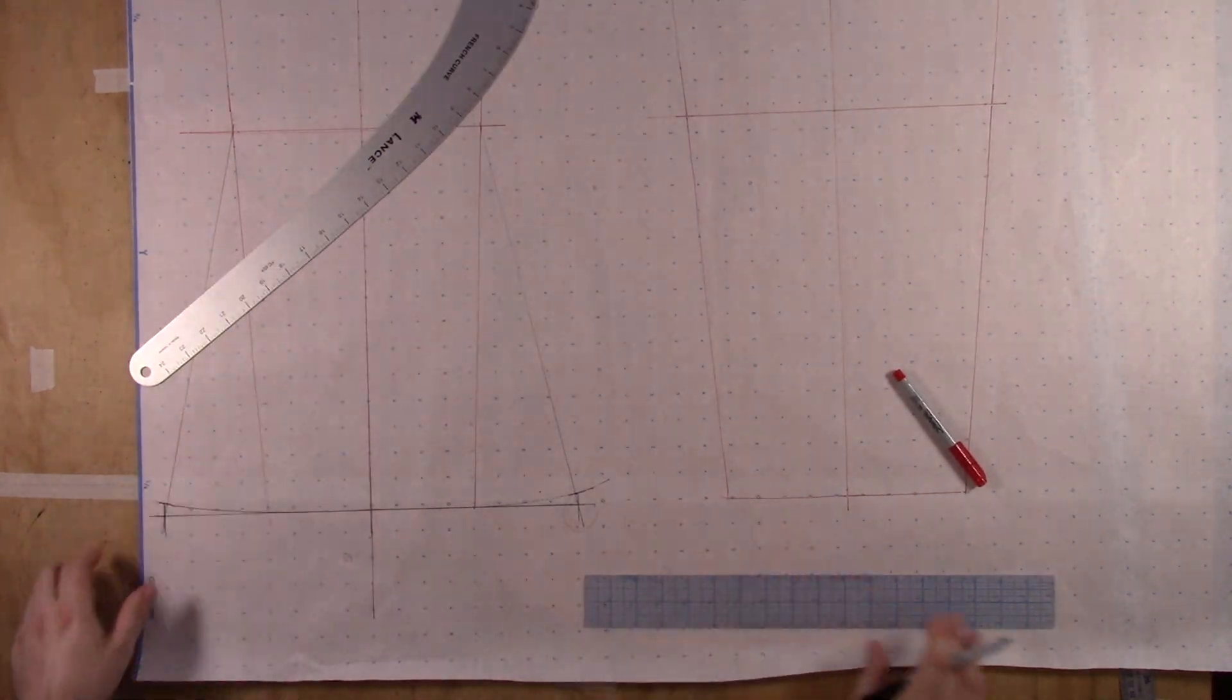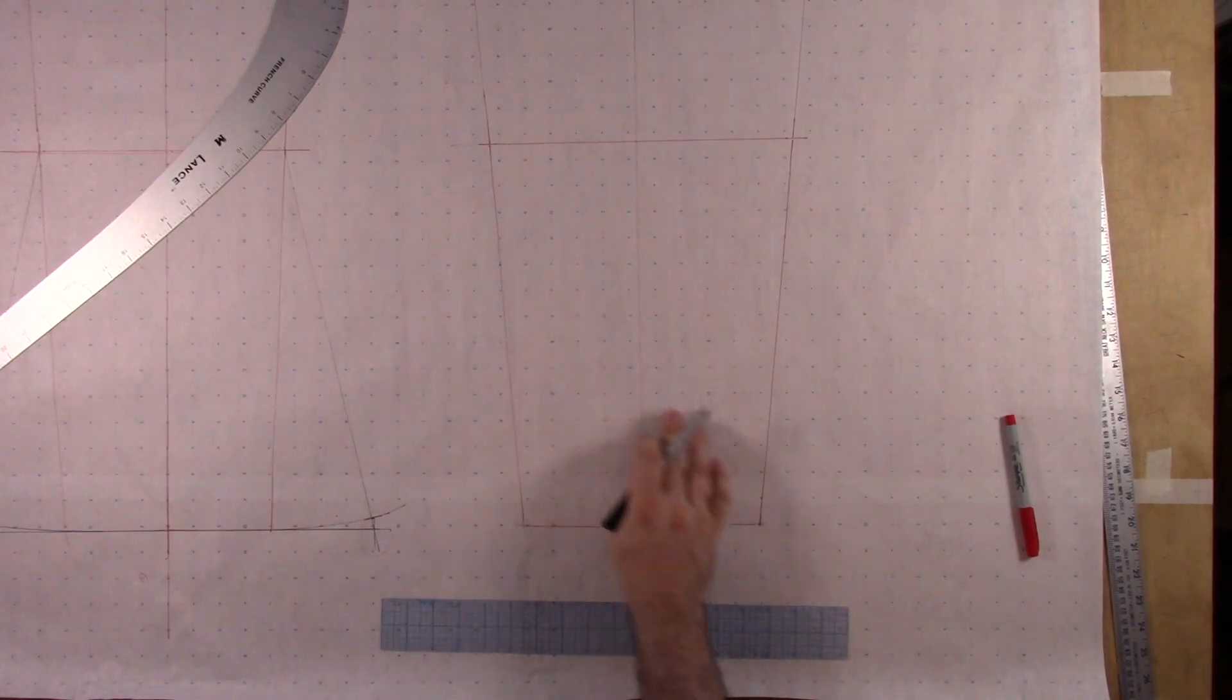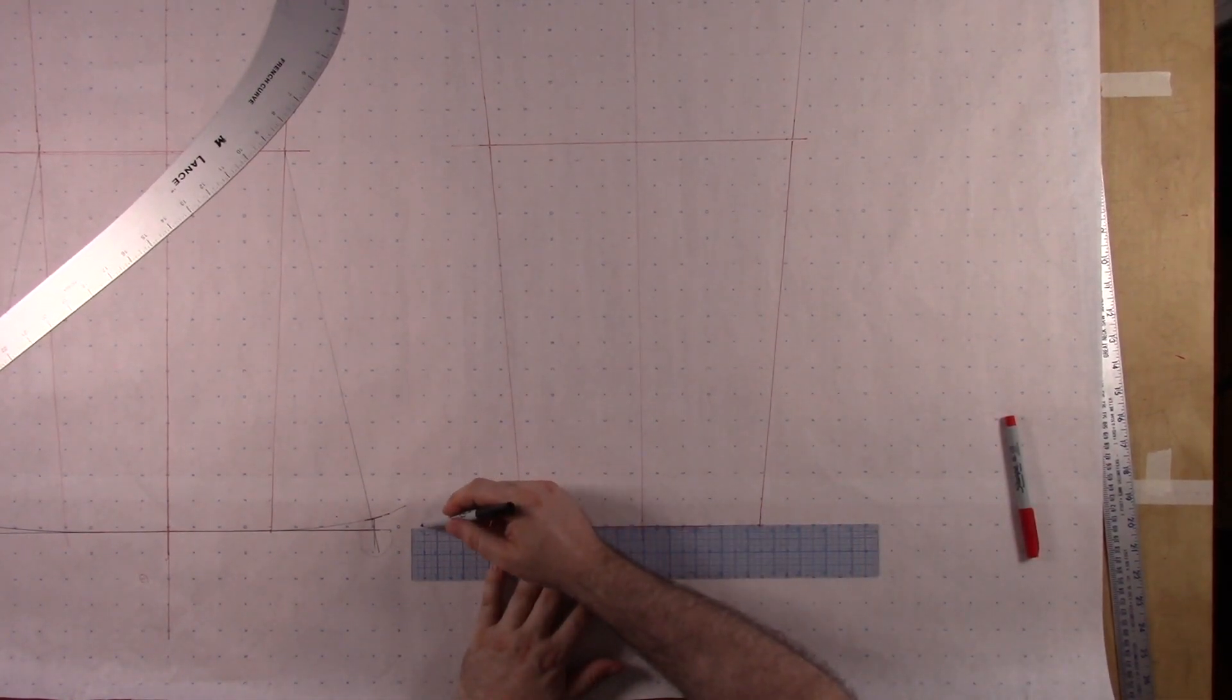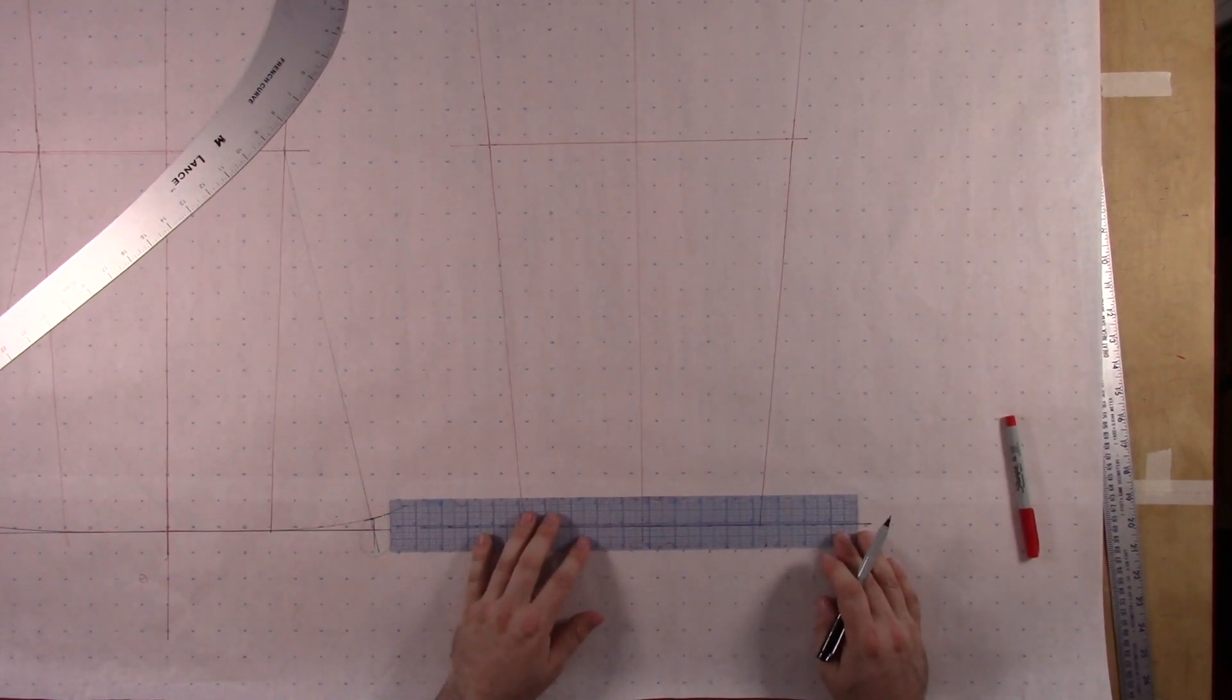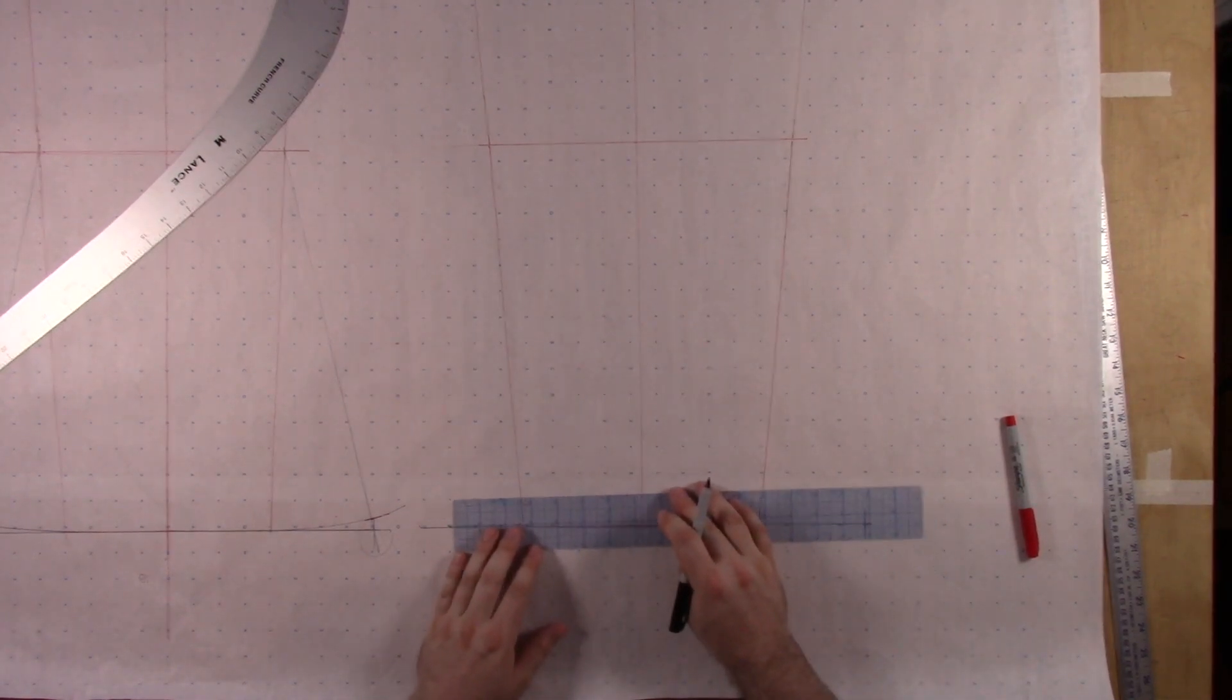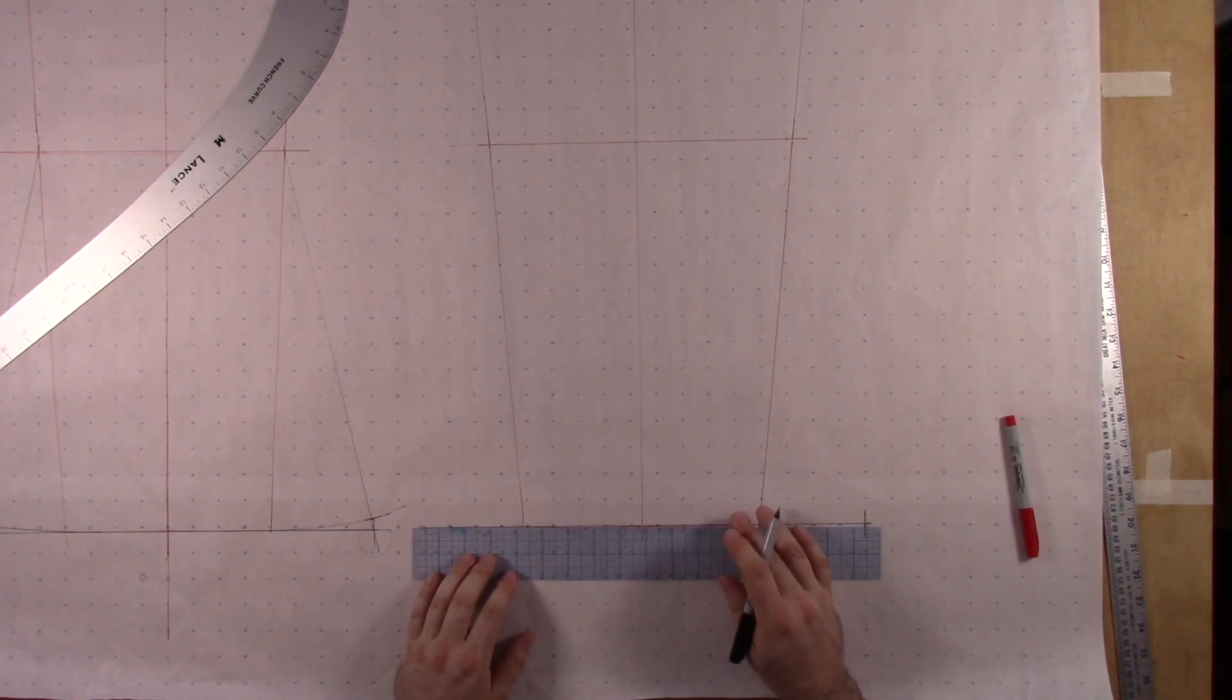Alright, so let's do the back. This is my inseam, side seam. First thing I'm going to do is true my hem line, and as I do that, I'll just draw the line longer than I need it. Now here at side seam, I'm going to flare out, or measure out, 4 inches, mark, and then the same thing here on the inseam, measure out 4 inches, and mark it.